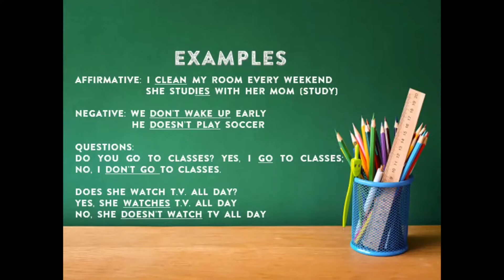Questions: Do you go to classes? Yes, I go to classes. No, I don't go to classes. And the second one: Does she watch TV all day? Yes, she watches TV all day. No, she doesn't watch TV all day. Tenemos que en las preguntas hay dos ejemplos, uno con el do y uno con el does. En el ejemplo del do: do you go to classes? — tú vas a clase. En la respuesta positiva, yes, I go to classes — no cambia nada, se coloca el verbo en presente normal. Y en la negativa hay que colocar la negación: el don't, porque estamos con el sujeto I.